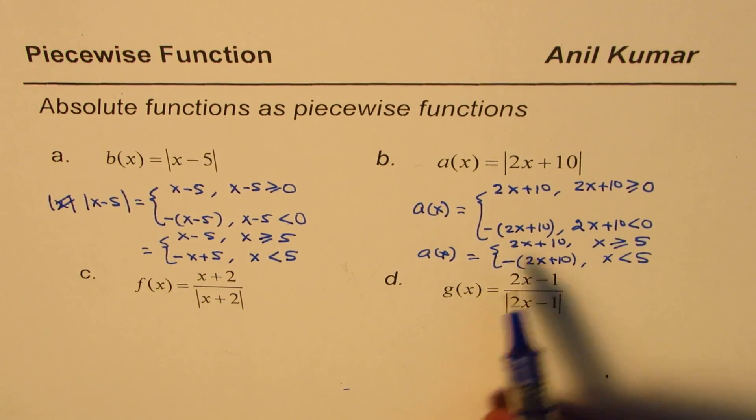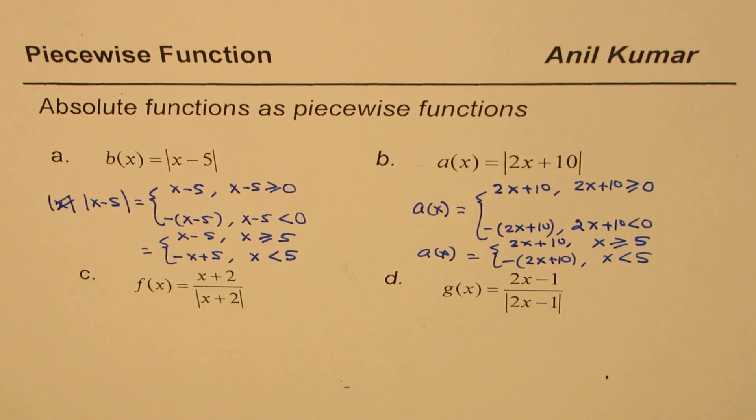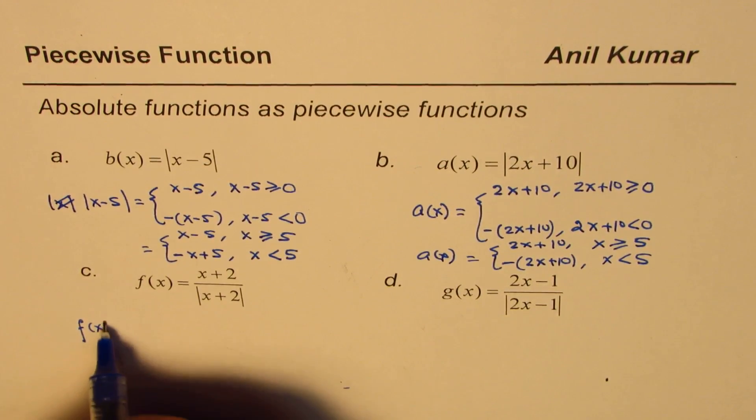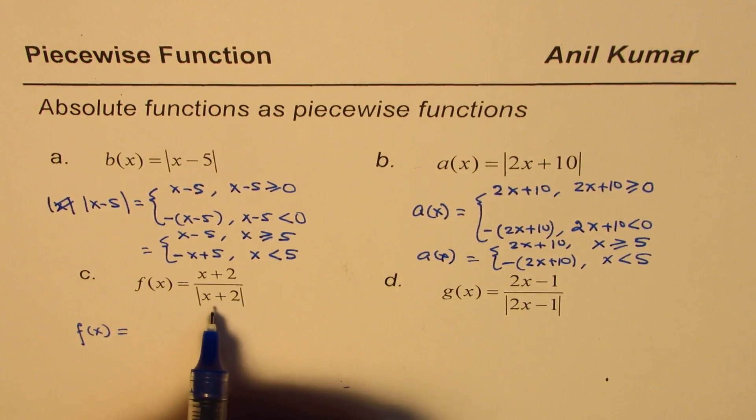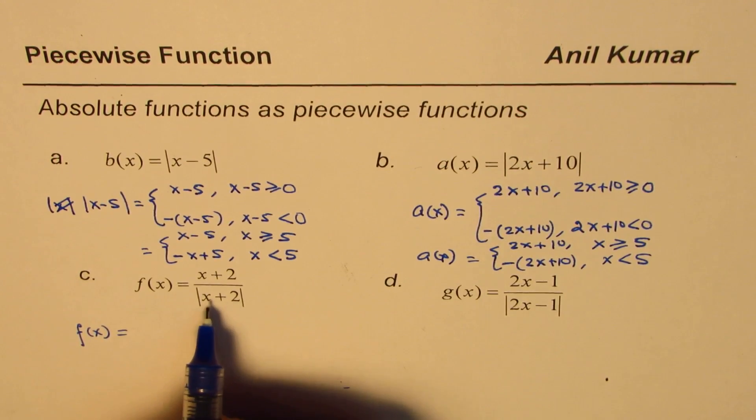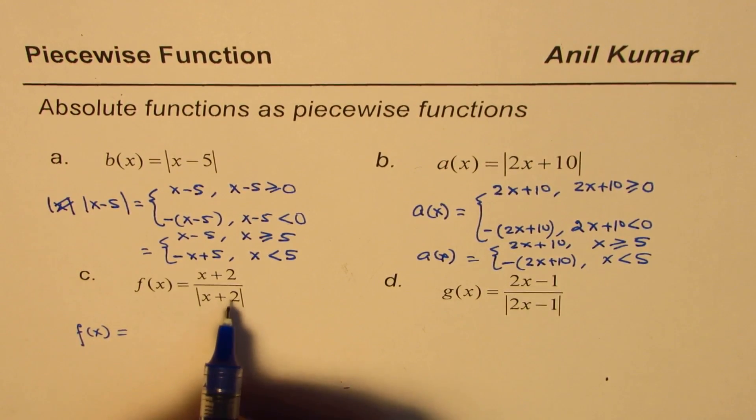Now based on this let's solve these two questions. You can actually pause the video and answer them. So let's see how to define f(x). f(x) will be equals to this denominator part which is x plus 2 absolute value will be positive when x is greater than equal to minus 2.